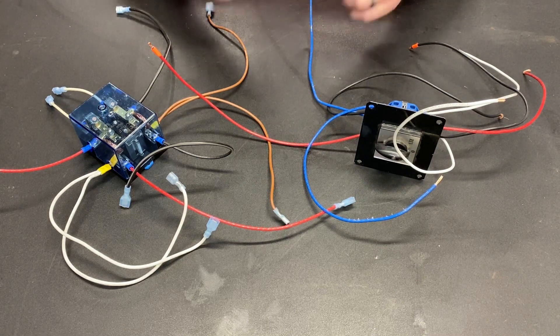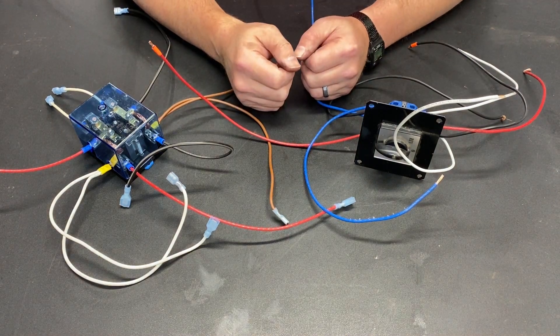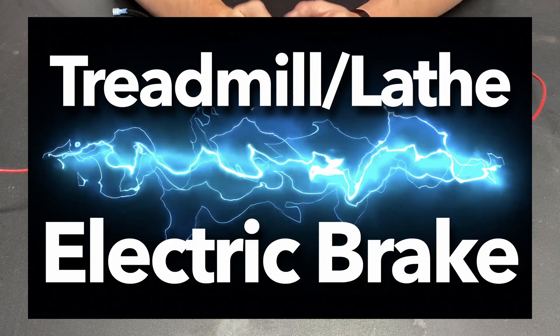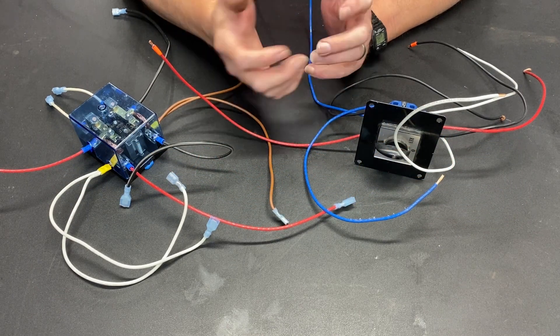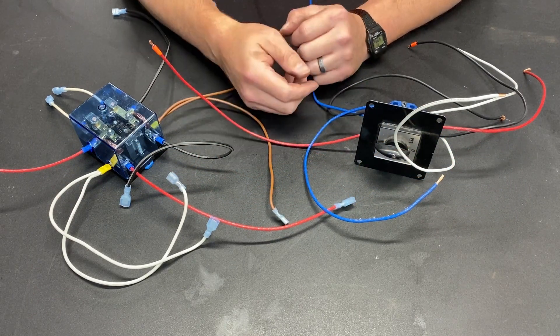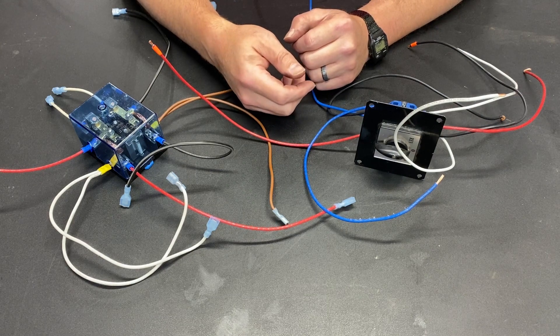Greetings fellow DIYer and welcome to my video. About a month ago I put together a video showing how you can use a braking resistor as a way to slow down a DC motor and effectively add an electric brake to whatever you're driving with that motor.